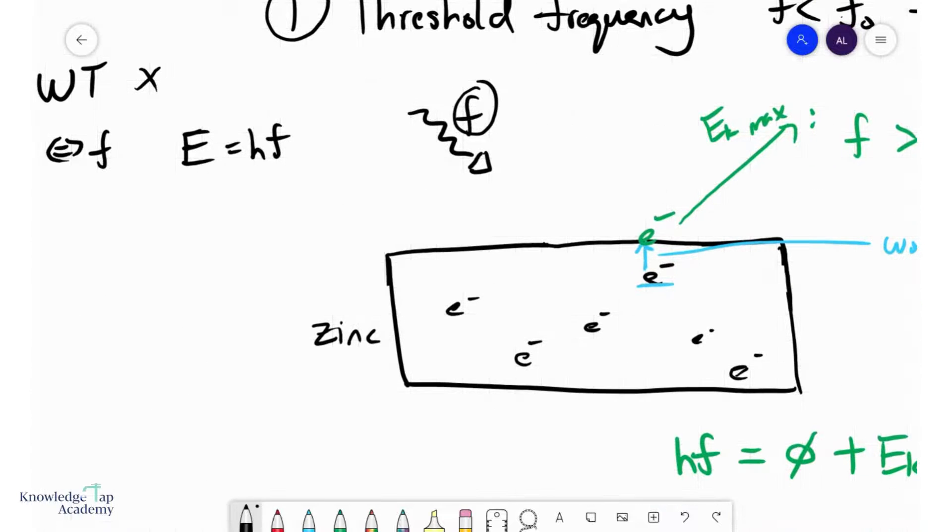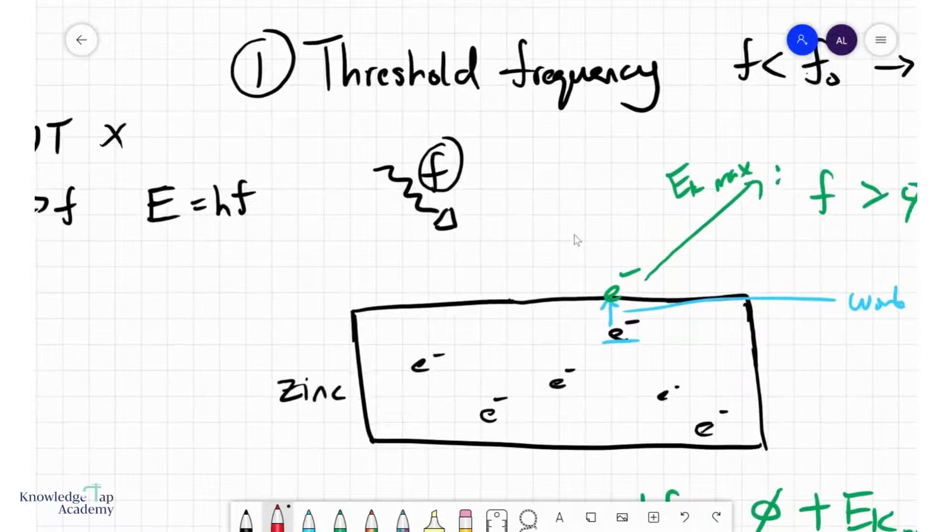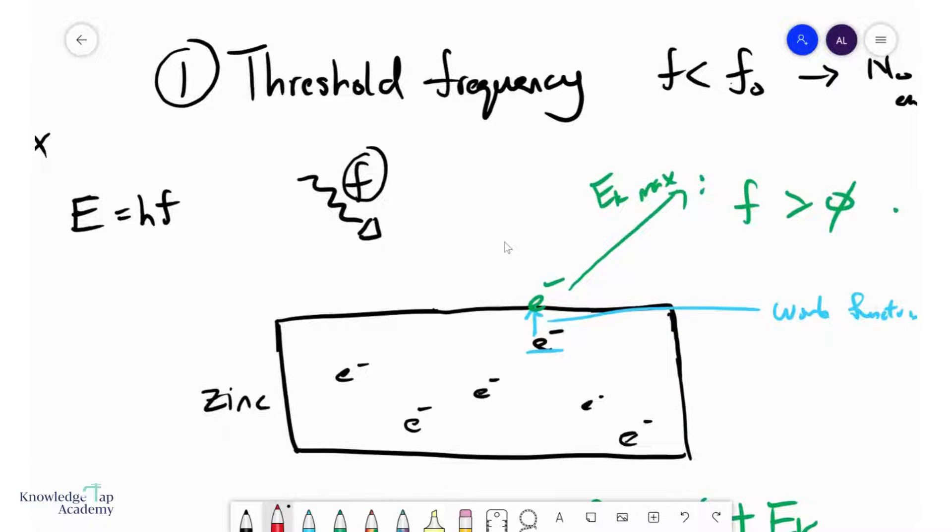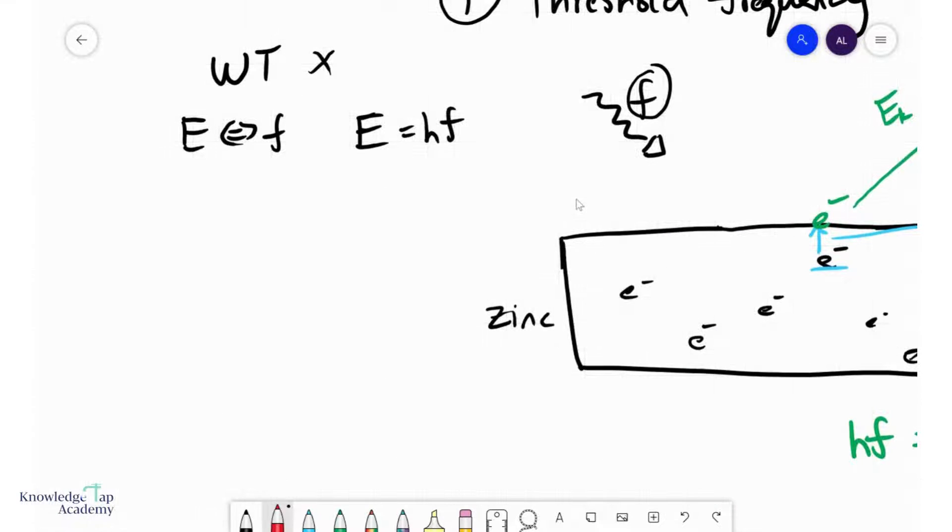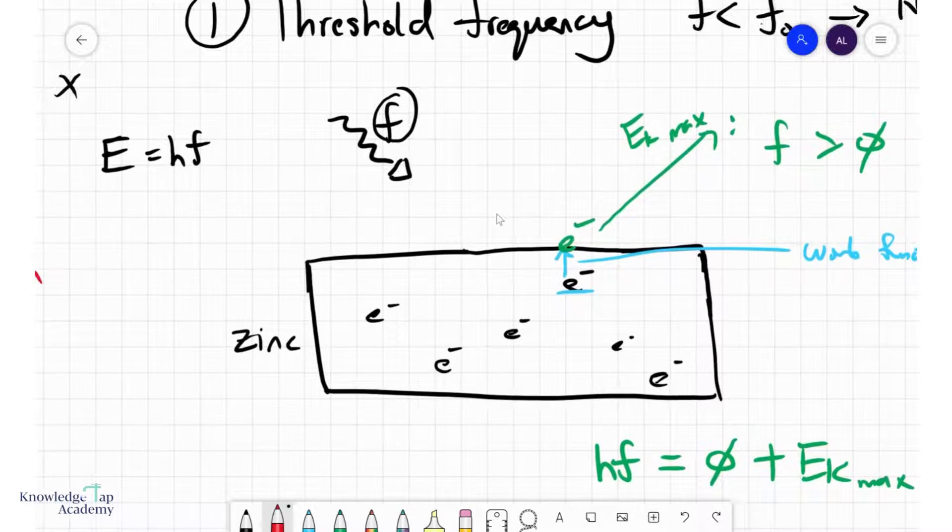Now, the second and more subtle thing is that no matter how long you illuminated the zinc with frequencies below the threshold frequency, there would be no photo emission. Wave theory believed in energy accumulation, and so even if your photon had a very low frequency, what wave theory predicts is that eventually your electrons would accumulate enough energy to come out. But this never happened.